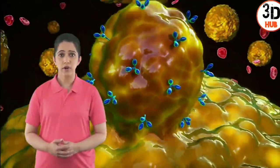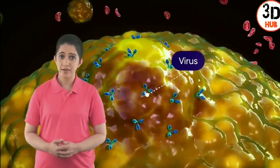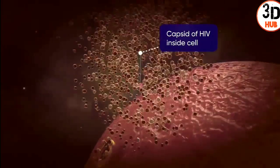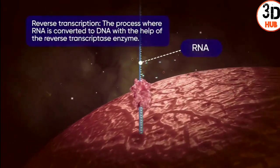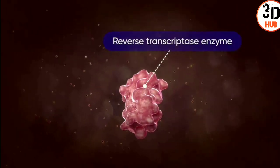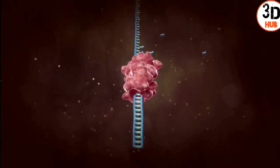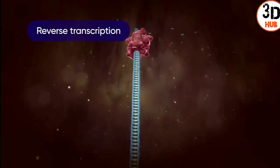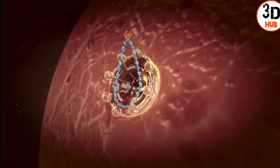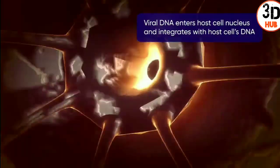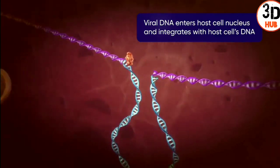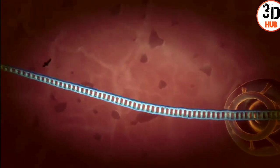The CD4 receptors attach themselves to the flexible HIV surface proteins and fit them on the core receptor. This binding leads to the fusion of the virus with the membrane, and the virus infects the TH cell. Inside the T helper cells, the RNA genome of the virus is converted into DNA with the help of the reverse transcriptase enzyme.